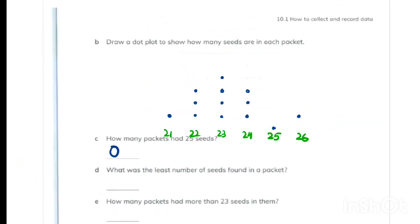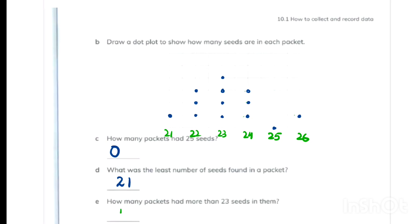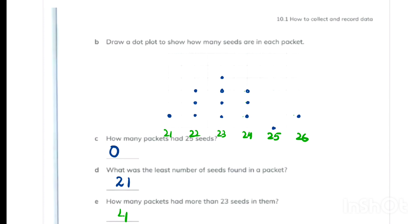How many packets had 25 seeds? So zero packets had 25 seeds. What was the least number of seeds found in a packet? So 21 is the least number of seeds. And how many packets had more than 23 seeds? So 24, 1, 2, 3 packets has 24 and 1 packet has 26, so 4 packets. Thank you for watching.